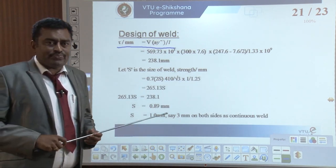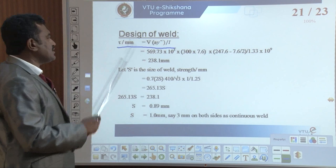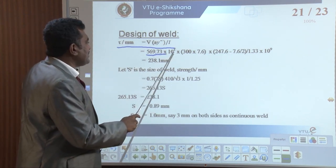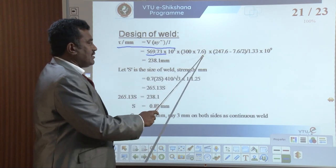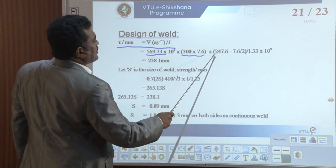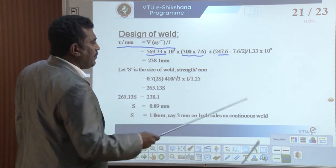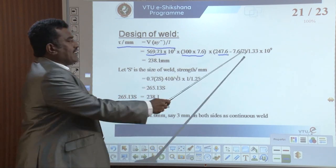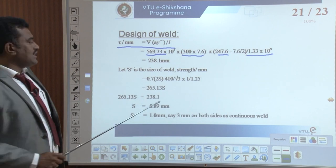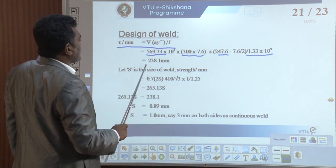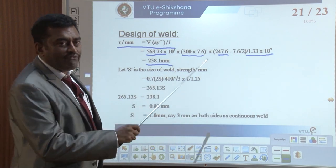The nominal shear stress: V ultimate equals 569.73 into 10 raised to 3, into 300 into 7.6 (area of the MC channel section), into (249 minus 7.6 divided by 2 — the CG from top minus 7.6 divided by 2), divided by I total equals 1.33 into 10 raised to 9. This gives tau per mm equals 238.1 N/mm — so up to 238.1 N/mm per meter, we can weld it.